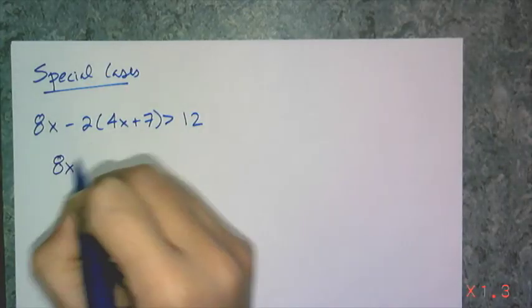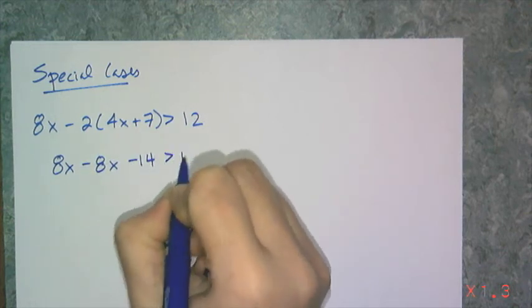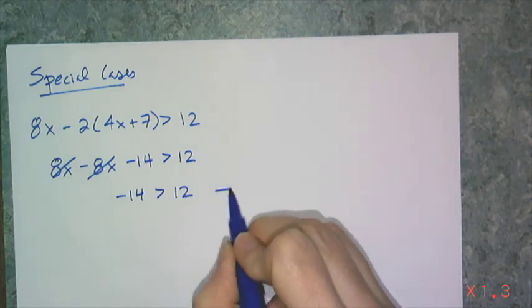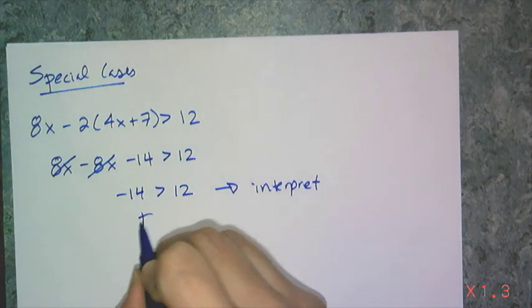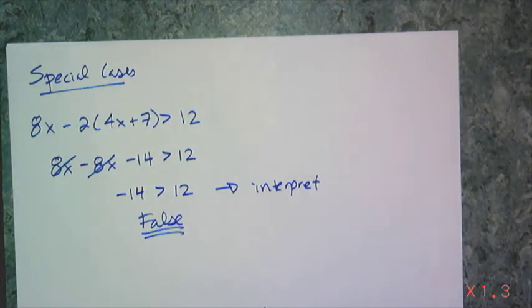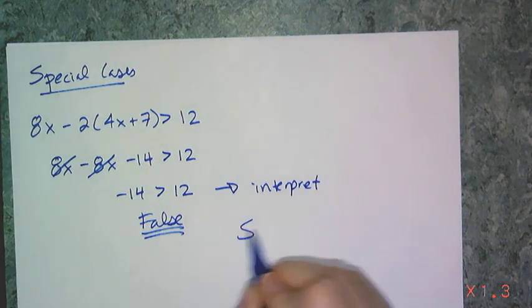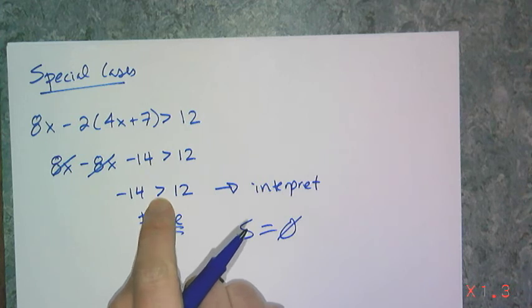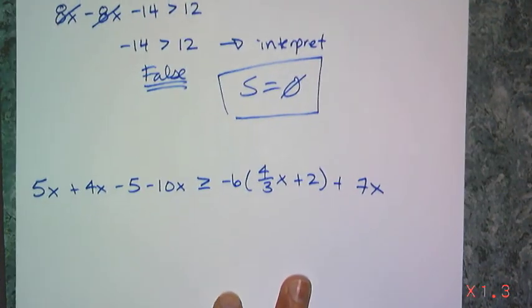So I have 8x; distributing a negative 2, I get negative 8x minus 14 is greater than 12. Those terms cancel and I'm left with negative 14 is greater than 12. You have to interpret this outcome: my variables are gone and I'm left with the statement negative 14 is greater than 12, which is totally false. A false statement means no solution — just like when an equation gives you negative 14 equals 12. I have to check the symbol of order, and since the symbol of order is wrong, there's no solution for that inequality.